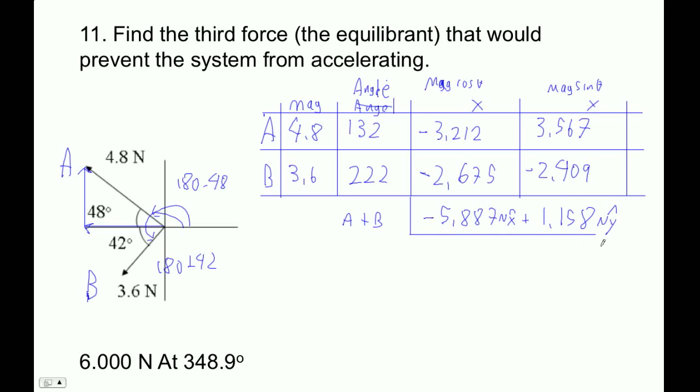Now, this is the sum of those two vectors. If I add negative the sum, that will be the equilibrium. So that's the trick here. The negative sum is positive 5.887 plus negative 1.158 Newtons in the y direction.